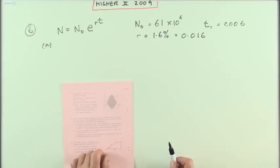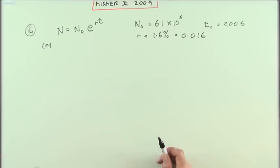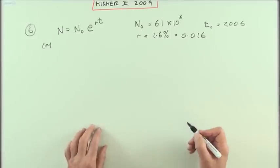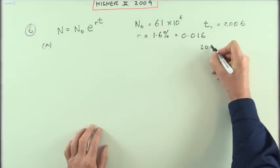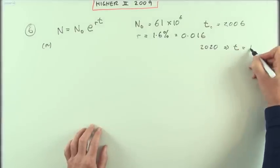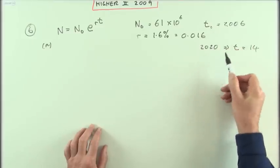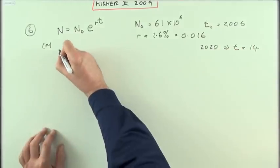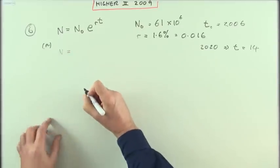So it says, assuming that it remains constant, what would be the population in 2020? Well, 2020 means that T is going to be 14 years later. Starting from T0, that's 14. Just put it all in. This is just a pressing buttons question.